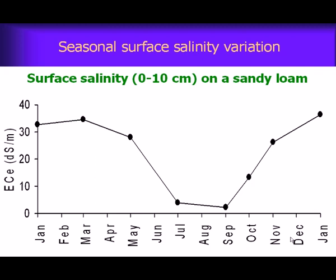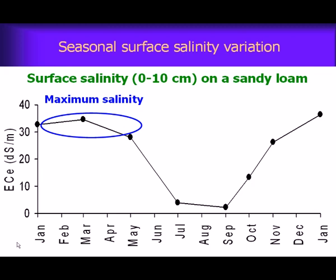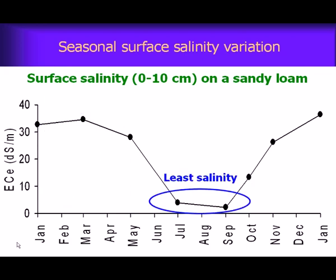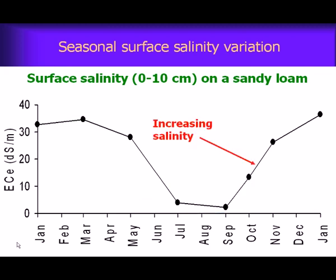To illustrate this, for a sandy loam soil at Darken in Western Australia, we've plotted salinity levels in the top ten centimetres measured as electrical conductivity units. In summer and early autumn the levels in the top ten centimetres are at their maximum. Then at the break of the season, rains flush the salts from the surface down lower in the profile. During winter we see lower salinity levels, and for some species with at least moderate salt tolerance they can grow satisfactorily. As soils dry out in spring and summer the levels increase again.